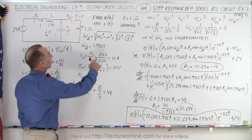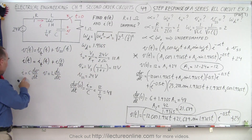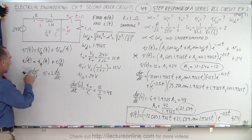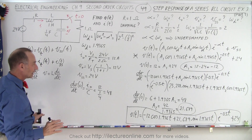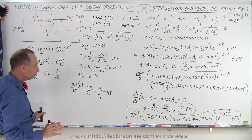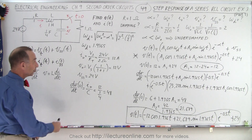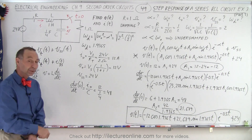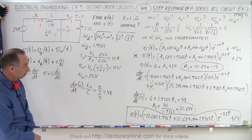We still need to find the current as a function of time, using the equation current equals C times dv/dt. That calculation will be quite involved, so we're going to need Part 2 to work through it.